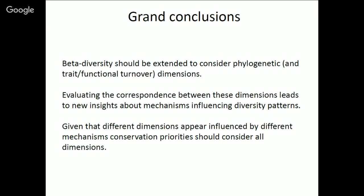My grand conclusions are that diversity should be extended to consider phylogenetic and other dimensions, such as trait and functional. Evaluating the correspondence between these dimensions leads to new insights about the mechanisms influencing diversity patterns — as I showed with both hummingbirds and mammals. Given that different dimensions appear influenced by different mechanisms, conservation priorities should consider all of these dimensions. We explored one way to use popular and effective conservation planning softwares such as C-Plan and Zonation, all of which are fundamentally based on complementarity — which is fundamentally beta diversity — and how we might apply those to these different dimensions.